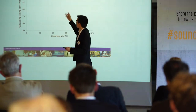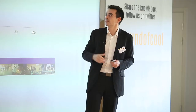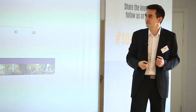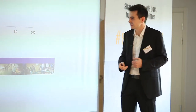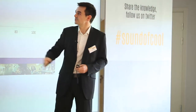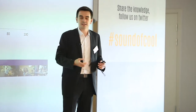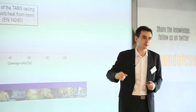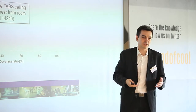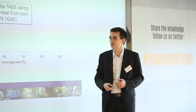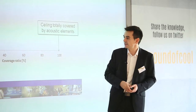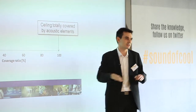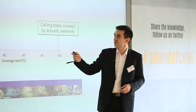I decided to use a graph from standard EN 14240, which is used to evaluate the cooling capacity of the ceiling. On this axis, we have the ability of the TABS ceiling to absorb heat. When it's 100, the ceiling works perfectly. When it's lower than 100, it means that something — the acoustic panel, for example — reduces the cooling power of the TABS. And here I plot the ceiling coverage ratio. If it's zero, it's a free ceiling; if it's 100, it's a ceiling fully covered with acoustic panels.